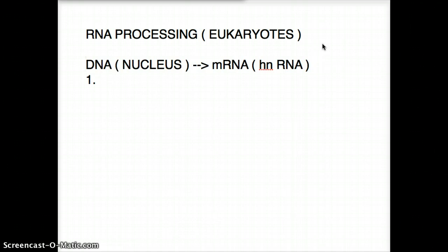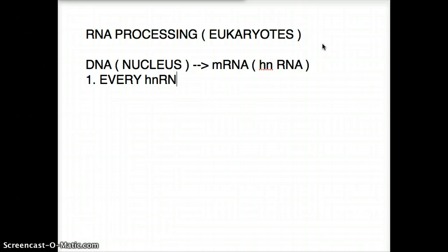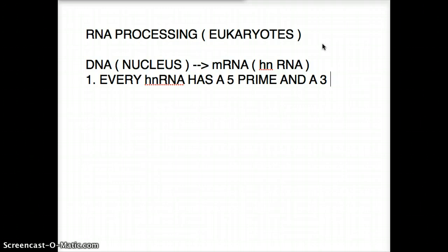So what are the different things that happen to this RNA so that it can take the leap from the nucleus to the cytoplasm? First of all, like any DNA, every RNA has a five prime and a three prime. So every heteronuclear RNA has a five prime and a three prime. Now, what happens with these different ends?